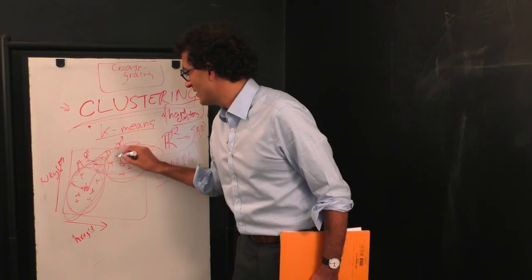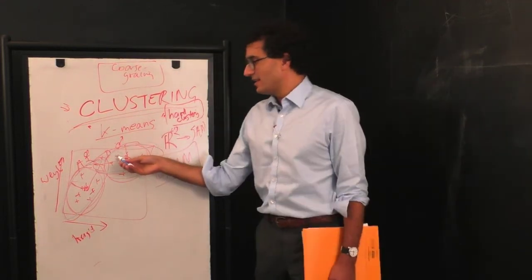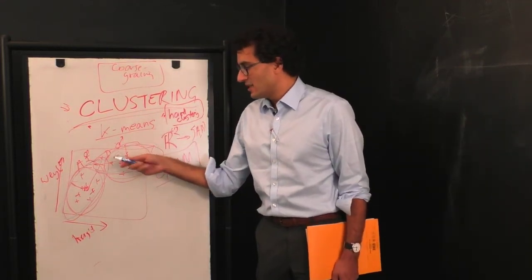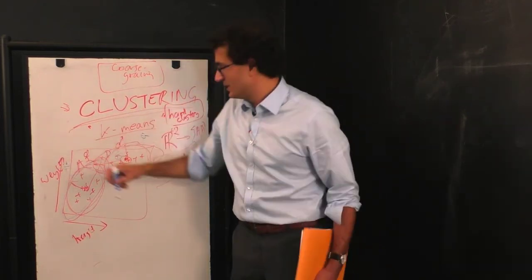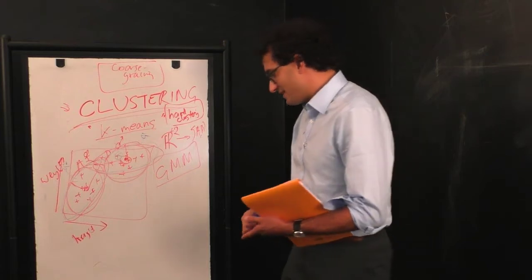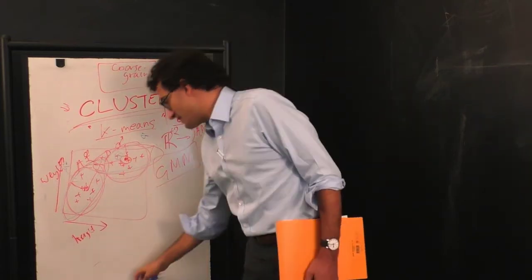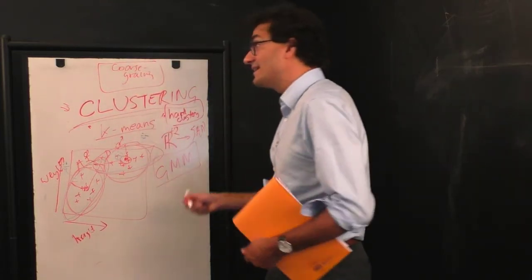And then for each point here, it tells you the probability that that point was drawn either from this Gaussian, call that G1, or this Gaussian, call it G2. So, in fact, in this case, it's giving you not a unique assignment, but it's giving you a sort of probabilistic assignment.